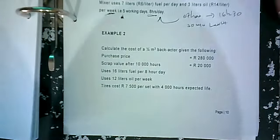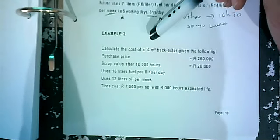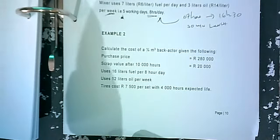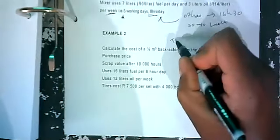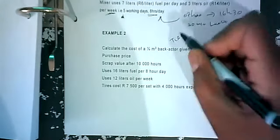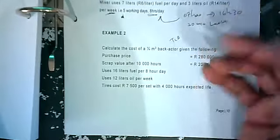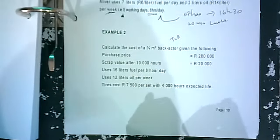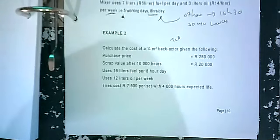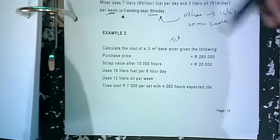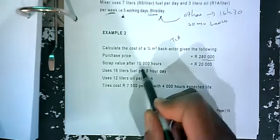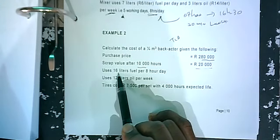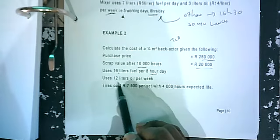Example two: calculate the cost of a quarter cubic meter back actor — that's a TLB, a machine with a bucket in the front and a different bucket in the back, with larger tires at the back and smaller ones at the front. Given the following: purchase price 280,000; after 10,000 hours it's valued at only 20,000. It uses 16 liters of fuel per eight-hour day and 12 liters of oil per week.